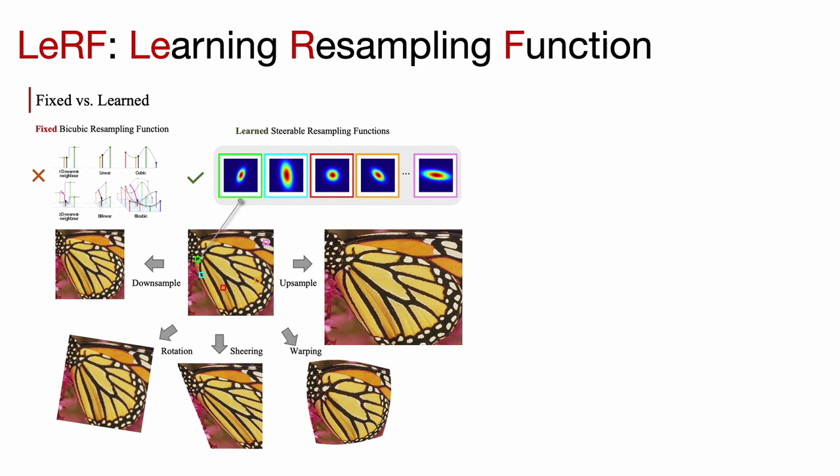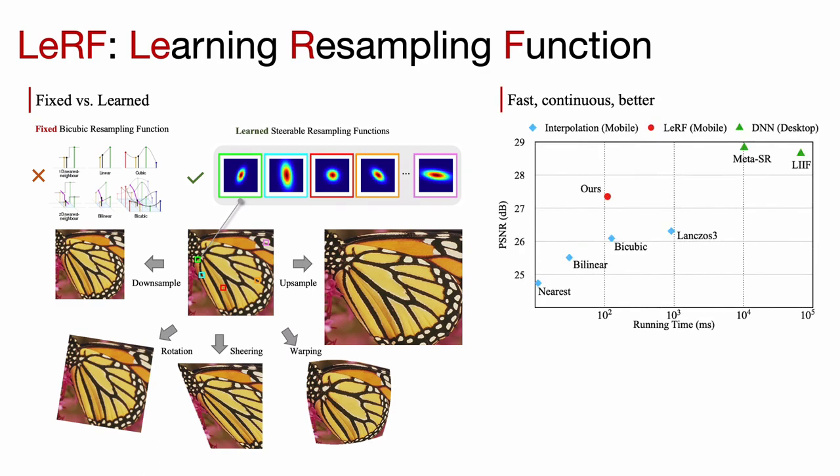Instead of adopting fixed function, our method assigns spatially varying steerable resampling functions to input image pixels and learns to predict the hyperparameters that determine the orientations of these resampling functions with a neural network. Accelerated by lookup table, our method runs as fast as interpolation, generalizes well to arbitrary transformations, and outperforms interpolation significantly.